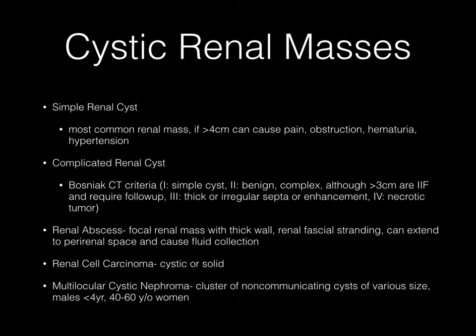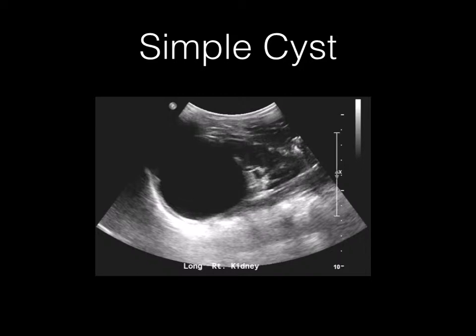Renal abscesses present as focal renal masses with a thick wall and renal fascial stranding, and can extend to the perirenal space. Renal cell carcinomas can be cystic or solid. The final lesion is multilocular cystic nephroma — a cluster of non-communicating cysts of various sizes — with bimodal age distribution, usually in males less than four years old and in women between 40 and 60 years. Here is a simple renal cyst: it is anechoic, has a well-defined posterior wall, and shows posterior acoustic enhancement.